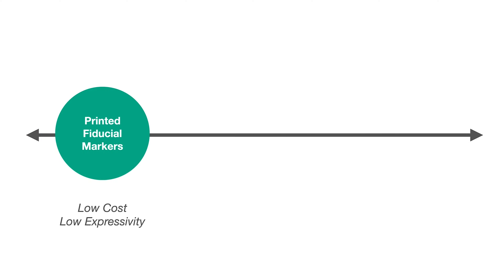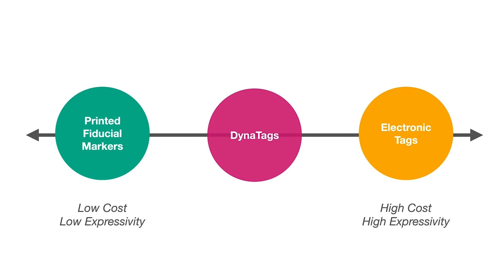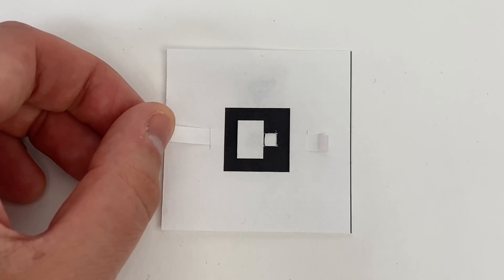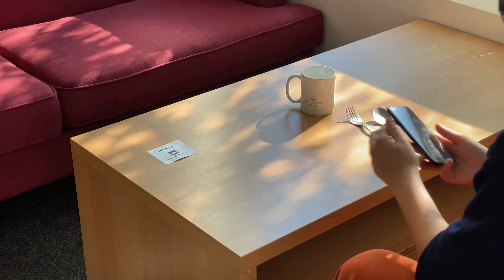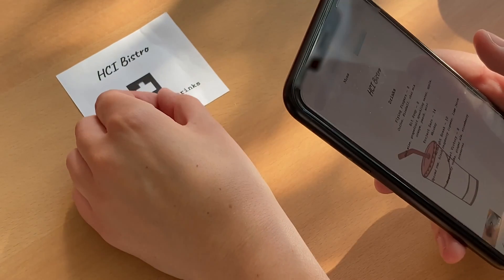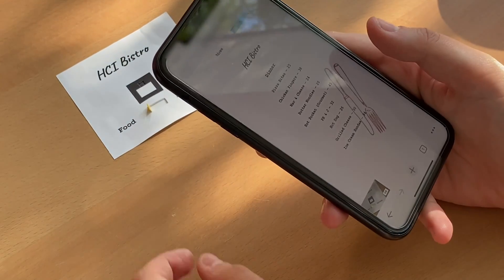In this work, we consider an approach between these two extremes, retaining the simple, low-cost nature of printed markers, but with some of the expressive capabilities of dynamic tags. We call our markers DynaTags. They are simple mechanisms constructed from paper that express multiple payloads, which are dynamically changed by hand, and can be read by a smartphone for a wide variety of applications.